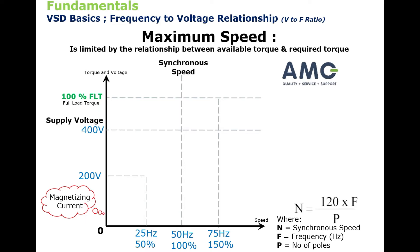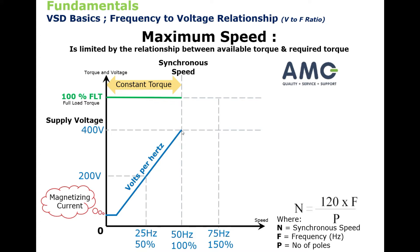When voltage is applied to a motor, enough current flows to magnetize the iron. At half speed, the frequency of the inverter will be 25 Hertz and the voltage across the windings will be 200 volts. At full speed or synchronous speed, the voltage across the windings will be 400 volts.